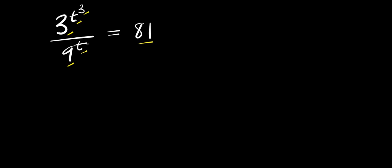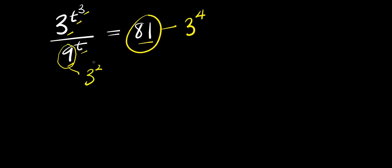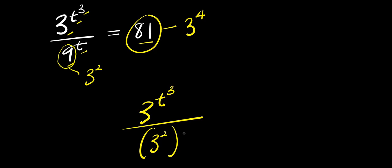Now, the first step is to ensure that all the bases here are the same. 81 we are going to express as 3 to the power of 4 — that is 3 times 3 times 3 times 3. And 9 here, I am going to express as 3 to the power of 2, and I am going to multiply the exponent by t. So I am going to have 3 to the power of t to the power of 3, divided by 9 is 3 to the power of 2, raised to the power of t, and this equals 81 which is 3 to the power of 4.